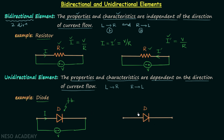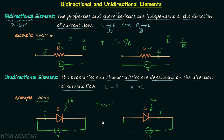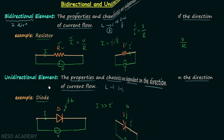Now take the same diode and voltage source but connect the negative terminal to the P side and the positive terminal to the N side. The diode gets reverse biased and offers very large resistance, so current I' is very small. Comparing I and I', I is much larger than I' — they are not the same — meaning the properties and characteristics of the diode change when the current is reversed. Therefore, a diode is a unidirectional element.